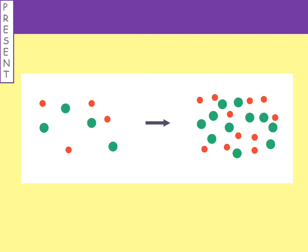Those of you that said the one with lots of particles is the concentrated one were correct, because they take up the same amount of space — the same volume — but have more particles crowded in, so it is more concentrated. If you had 100 millilitres of liquid in a beaker, the first one has just eight particles in it, but in the second one all those particles are packed into that same amount of space — more particles per space — so it's more concentrated.